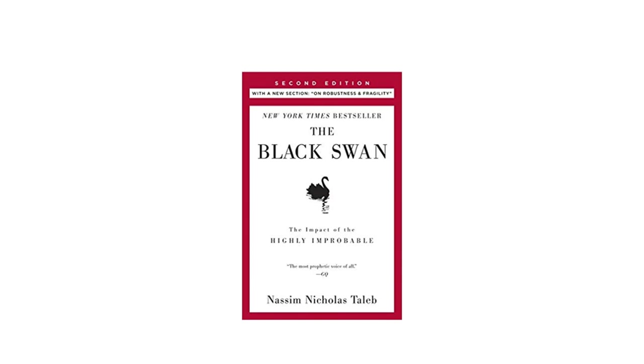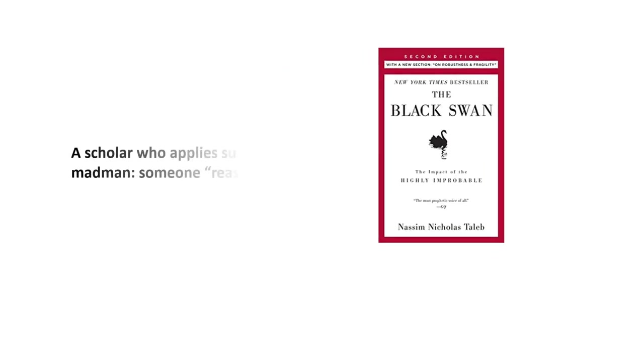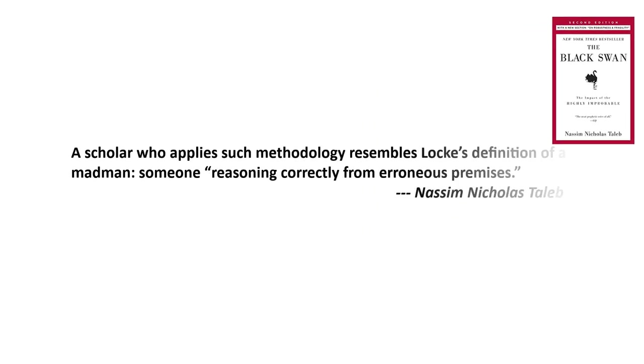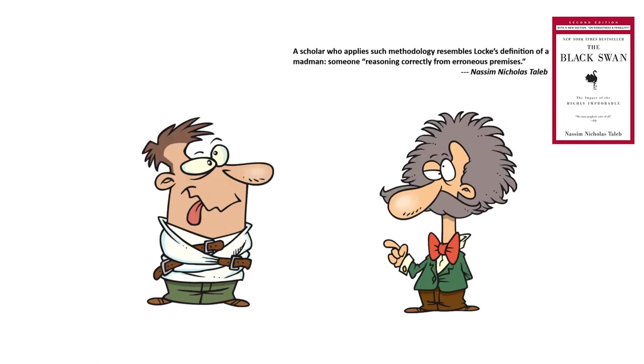I would like to quote from one of the smartest books I've read, Black Swan. This is a brief summary about philosopher John Locke's definition of a madman: someone reasoning correctly from erroneous premises. So there is perhaps only a fine line between the two. A perfectly logical man good at reasoning, but just from the wrong starting point.